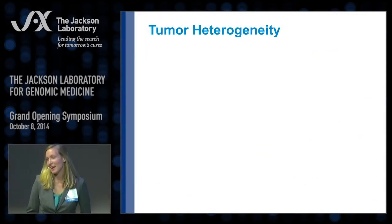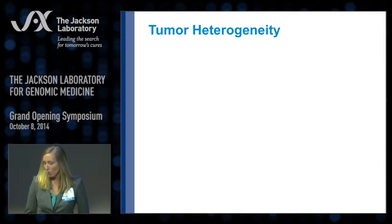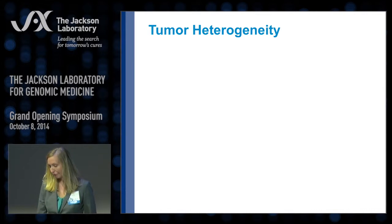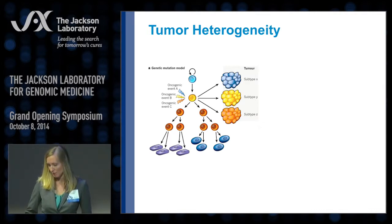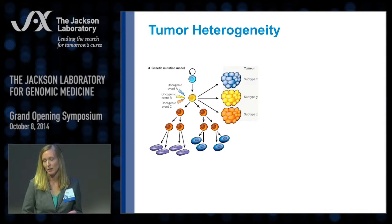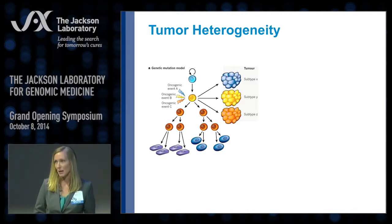This story revolves around the question and the problem of tumor heterogeneity — determining how and why different tumor subtypes can arise from the same tissue. There are a couple of models to account for tumor heterogeneity. One is a genetic mutation model, where the identity of an oncogenic event, whether a mutation or chromosome translocation, is responsible for driving a particular subtype of tumor.